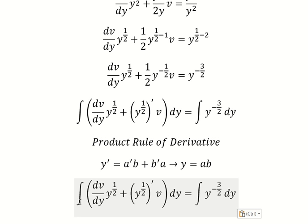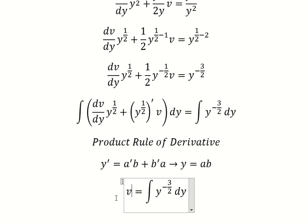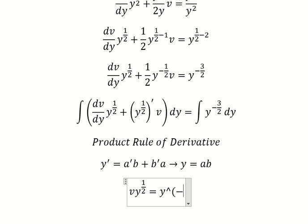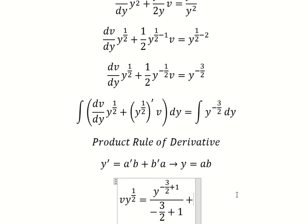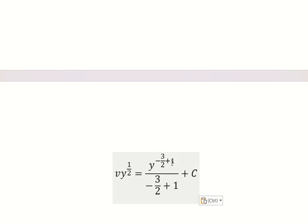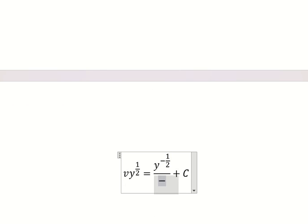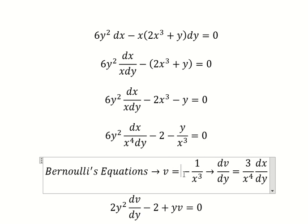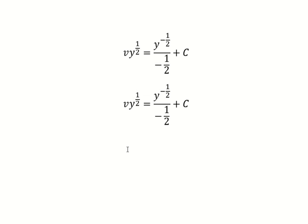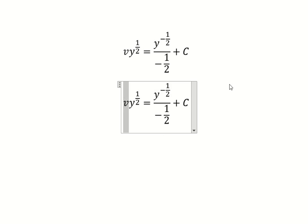The integral of that side gives us negative three over two plus one, over negative three over two plus one, and we add the constant C. This simplifies to negative one over two. For v, this is negative one over two.